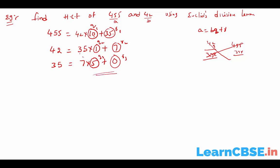Whenever the remainder becomes 0, we stop. The value of B in the step where the remainder becomes 0 is the HCF of the given numbers. In this case, B3 equals 7, so the HCF of 455 and 42 is 7.